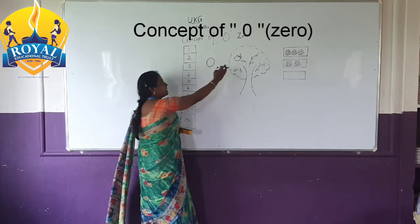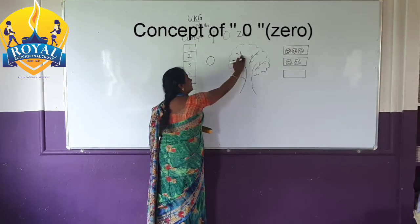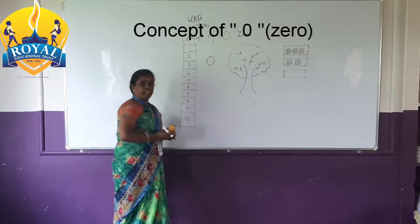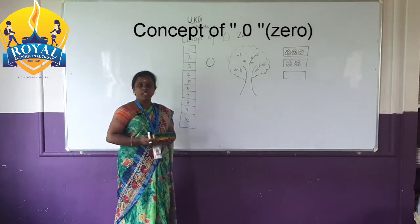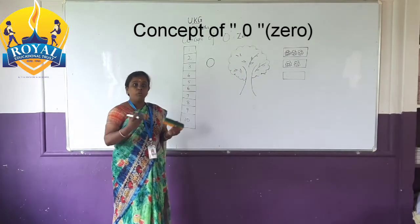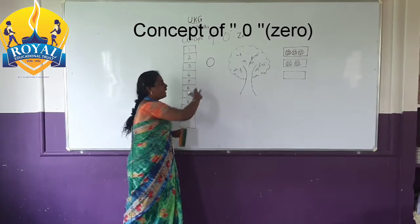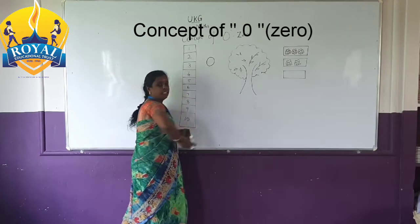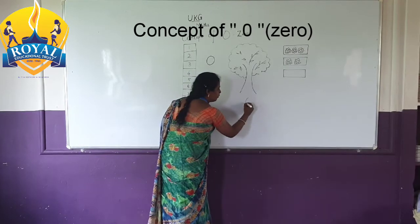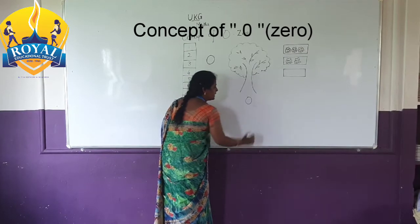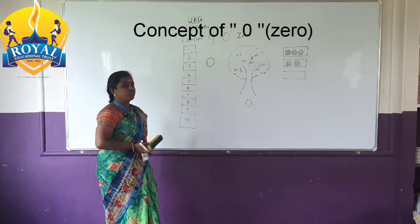That apple also I have picked. I pick 1 more. How many apples do we see now? No apples. No means 0. No means 0. No objects means 0.